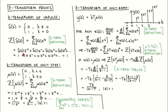The first term is 1 times 1, which is 1, and the rest of the terms are all 0 since the rest of the values of the impulse are all 0. The Z-Transform of an impulse is therefore equal to 1.